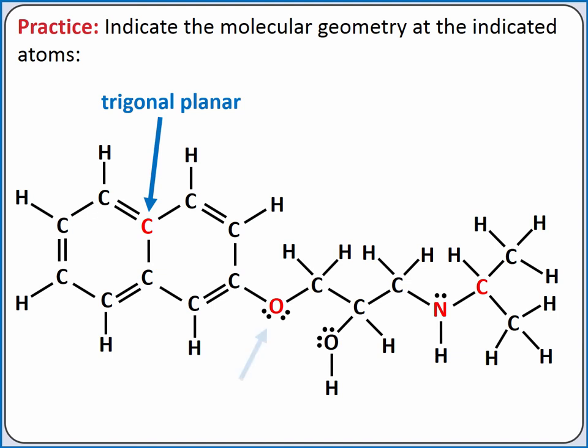Next, we can look at the oxygen atom. It has two bonding groups and two lone pairs, so it has a bent molecular geometry. For the nitrogen atom, it has three bonding groups and one lone pair.